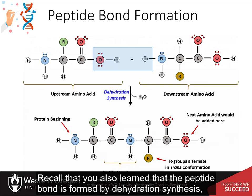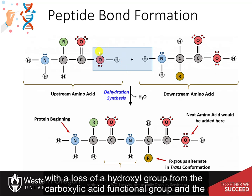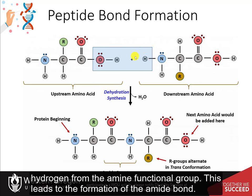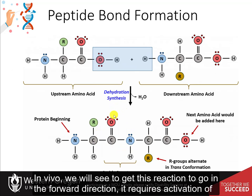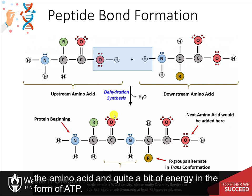Recall that the peptide bond is formed by dehydration synthesis, with the loss of the hydroxyl group from the carboxylic acid functional group and the hydrogen from the amine functional group, leading to the formation of the amide bond. In vivo, to get this reaction to go in the forward direction, it requires activation of the amino acid and quite a bit of energy in the form of ATP.